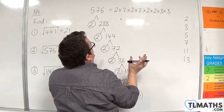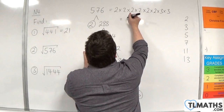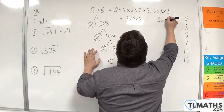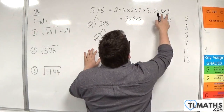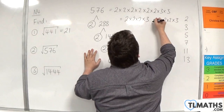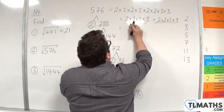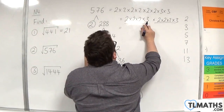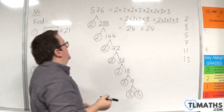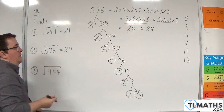So we want to share this out evenly. We've got six 2s — so three there and three there. And we need a 3 each. There are my pairs: 2 times 2 times 2 is 8, times by 3 is 24. So this is 24 times 24, meaning the square root of 576 must be 24.